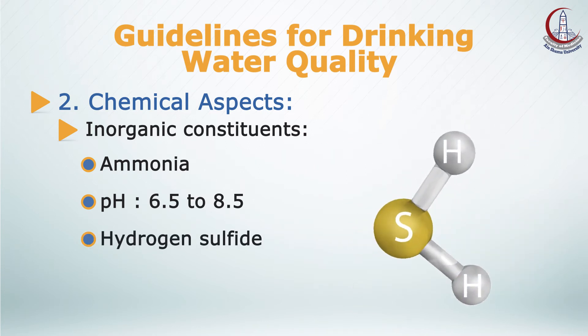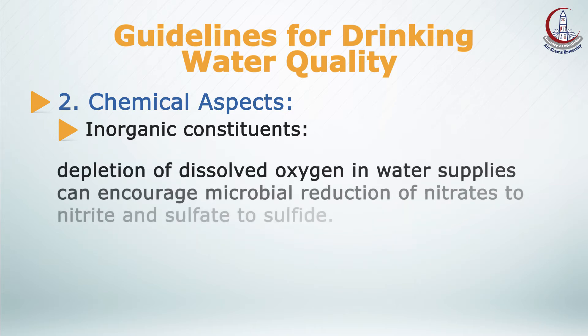Hydrogen sulfide: the rotten-eggs odor of hydrogen sulfide is particularly noticeable in some groundwater and in stagnant drinking water in the distribution system, as a result of oxygen depletion and the consequent reduction of sulfate by bacterial activity. Moreover, depletion of dissolved oxygen in water supplies can encourage microbial reduction of nitrates to nitrites and sulfates to sulfides.